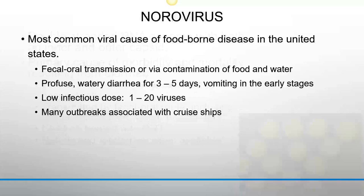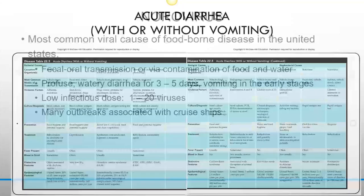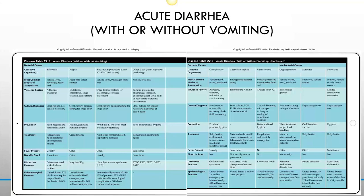Norovirus is the most common viral cause of foodborne illness in the United States, transmitted by the fecal-oral route or contaminated food and water. Symptoms include profuse watery diarrhea for three to five days and vomiting in early stages. It has a very low infectious dose — even one viral particle can cause symptomatic illness. Many outbreaks are associated with cruise ships.